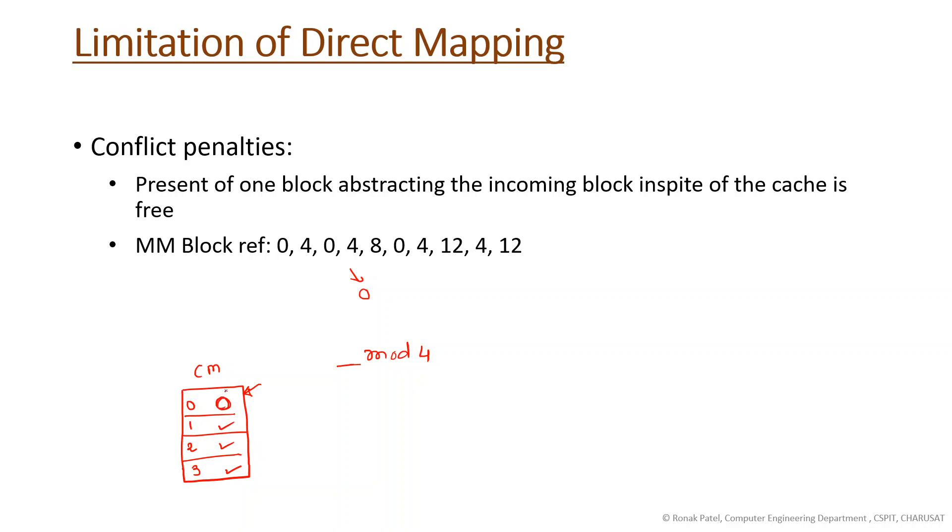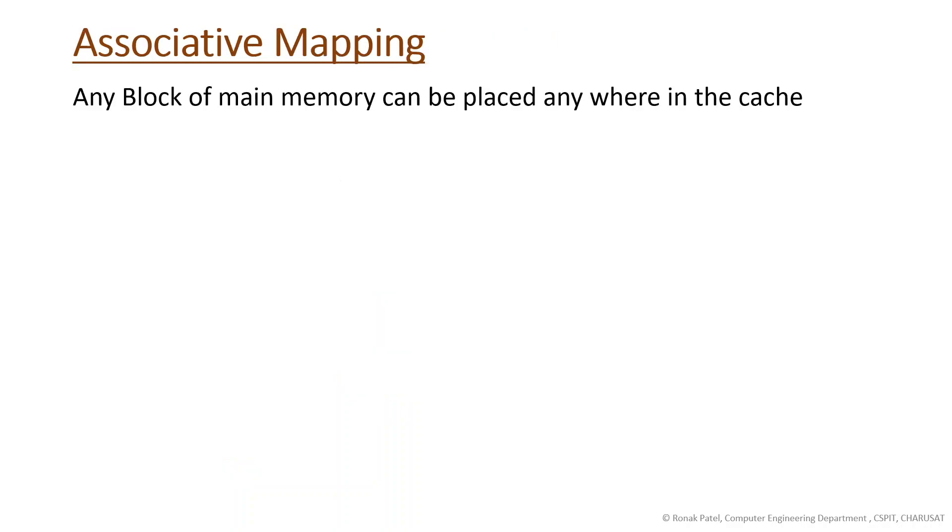This will increase page faults and results in poor cache utilization. This is the limitation of the direct mapping technique. This limitation is solved by associative mapping.